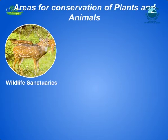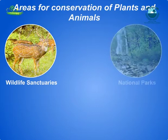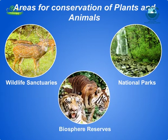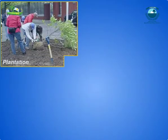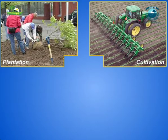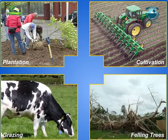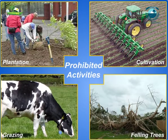Wildlife sanctuaries, national parks, biosphere reserves and protected areas are set aside for the conservation of plants and animals present in that area. Plantation, cultivation, grazing, felling trees, hunting and poaching are prohibited there.